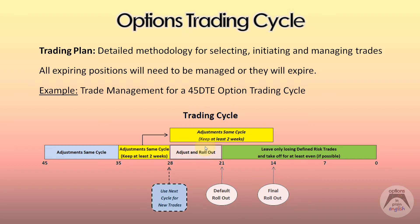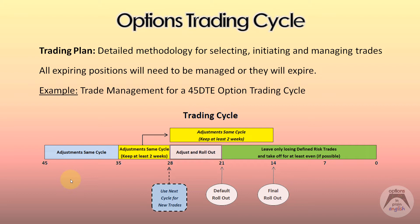For example, if you have a short strangle and it moved a lot and you have to balance your deltas, if that happens between 45 and 35 days to expiration, you can make that adjustment on the same cycle. The reason we designed it this way is that since we're looking to collect theta in a primarily premium selling strategy, we want to keep every adjustment for at least two weeks to give it time to collect significant theta. Otherwise, if you adjust and immediately roll to the next month, it won't make sense.